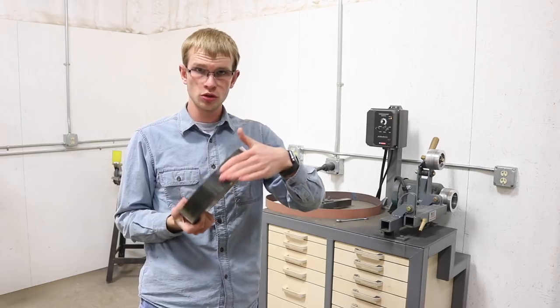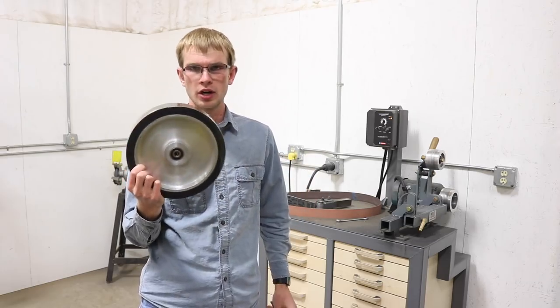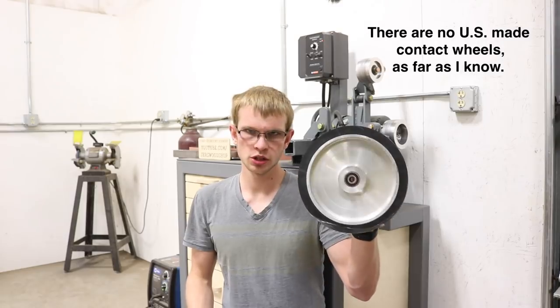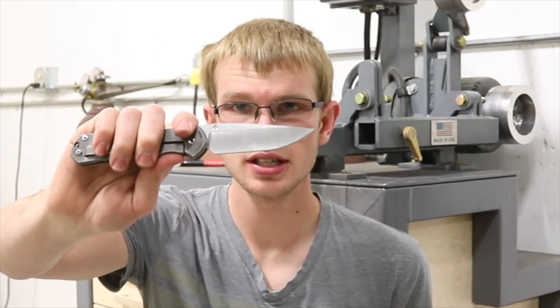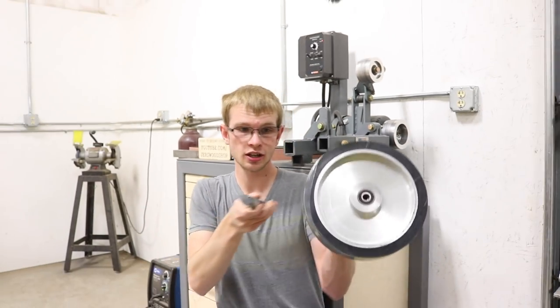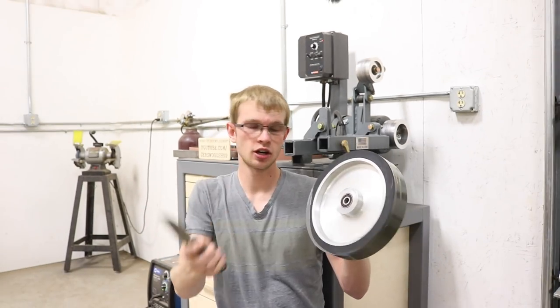This is a 10 inch smooth contact wheel made by Ameribraid. I don't know if it's any good, I think it's just kind of a cheap import one. Contact wheels are good for hollow grinding blades, so you can see on my knife blade the surface is concave. You need a convex surface to grind that concave blade.